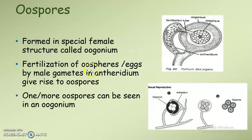Next we can see oospores, which are formed in a special female structure called oogonium. Inside the oogonium we can see oospheres, and these oospheres are fertilized by the male nuclei present inside the antheridium. The antheridium comes closer to the female oogonium, a fertilization tube is formed, and through this tube the male nuclei migrate into the oosphere. These oospheres get fertilized to form oospores — one or more oospores can be seen in a single oogonium.